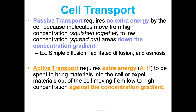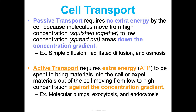Active transport requires extra energy in the form of ATP so that we can bring materials into the cell or expel them out. We're moving them against their concentration gradient — from areas of low to high concentration, like going up a slide. That's going to require extra energy. Examples are molecular pumps, exocytosis, and endocytosis.